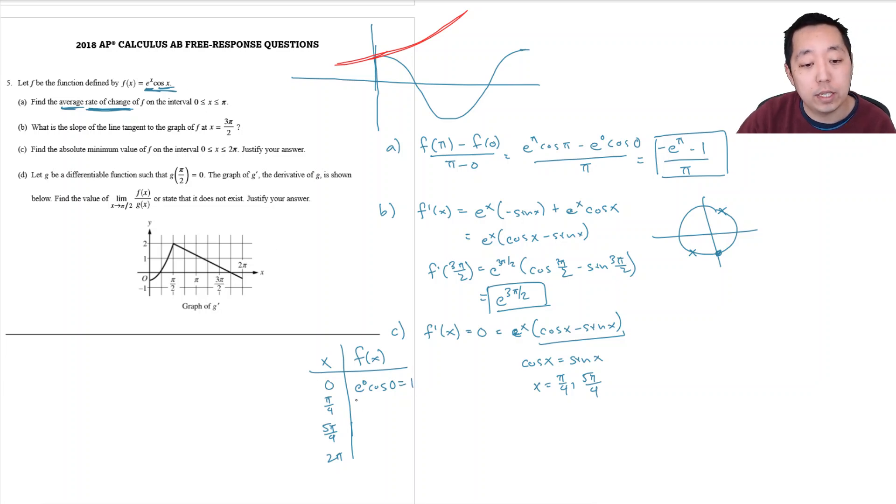When I plug in pi over 4, I get e to the pi over 4 root 2 over 2 because that's what cosine of pi over 4 is. For 5 pi over 4, I got e to the 5 pi over 4 and then the cosine of 5 pi over 4, the x value, is negative root 2 over 2.